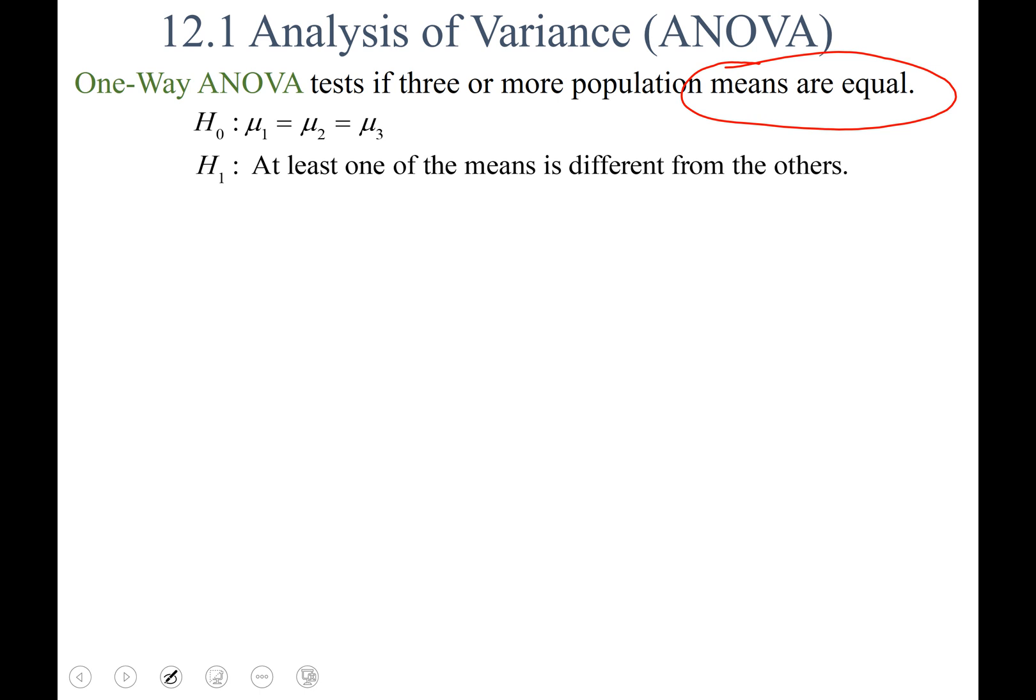So when you set up your null hypothesis, capital H sub-naught, you guys are used to that. We have mu sub-1 equal to mu sub-2 equal to mu sub-3. Now if you have more than three populations, then you can just tack on equals mu sub-4 equals mu sub-5. For however many populations you have, the null hypothesis is saying that their means are equal, and the alternative hypothesis is saying that at least one of the population's means is different from the others.